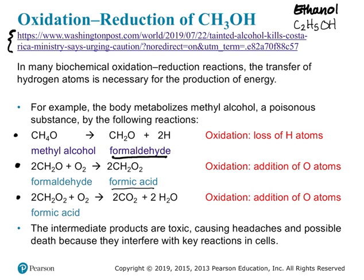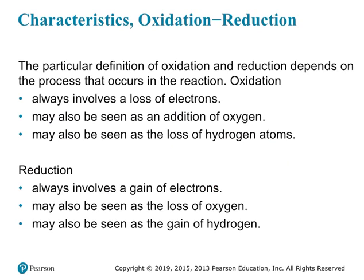To summarize: oxidation always involves a loss of electrons, but can also be seen as an addition of oxygen or a loss of hydrogen atoms. Reduction always involves a gain of electrons, but can also be seen as a loss of oxygen or a gain of hydrogen. That's the end of module four — we'll move on to module five in the next video.